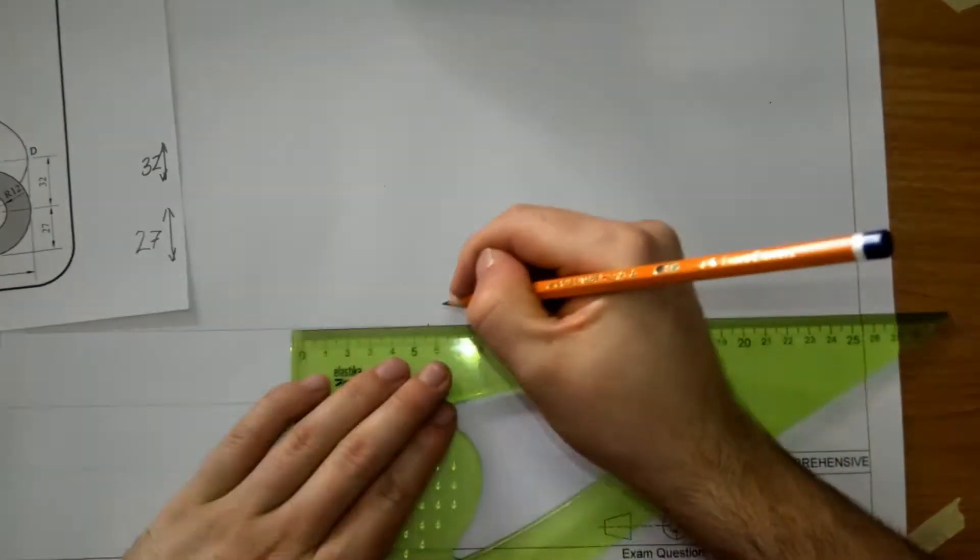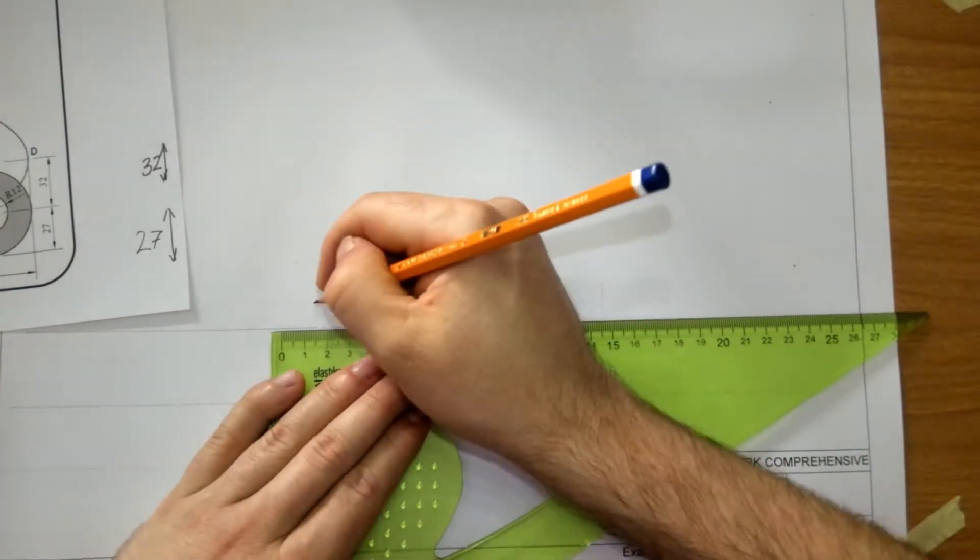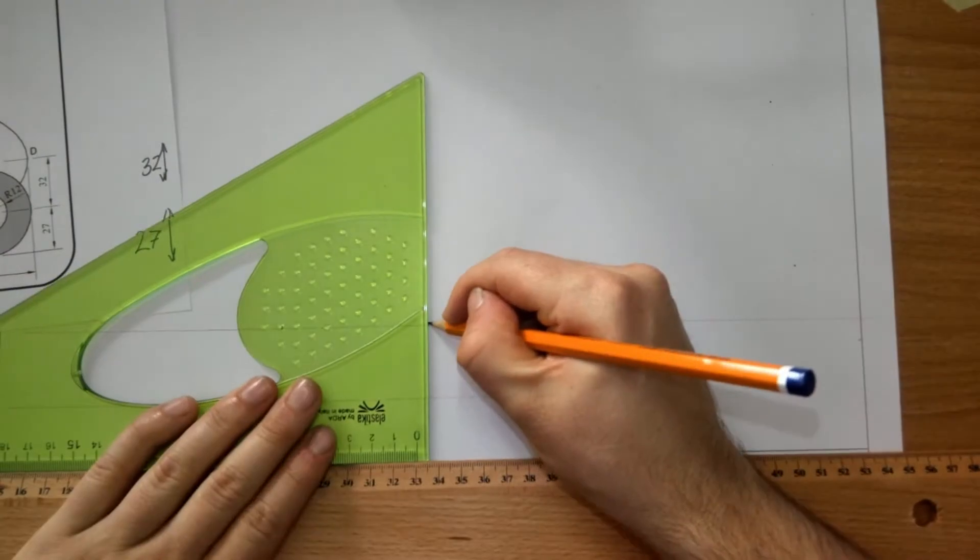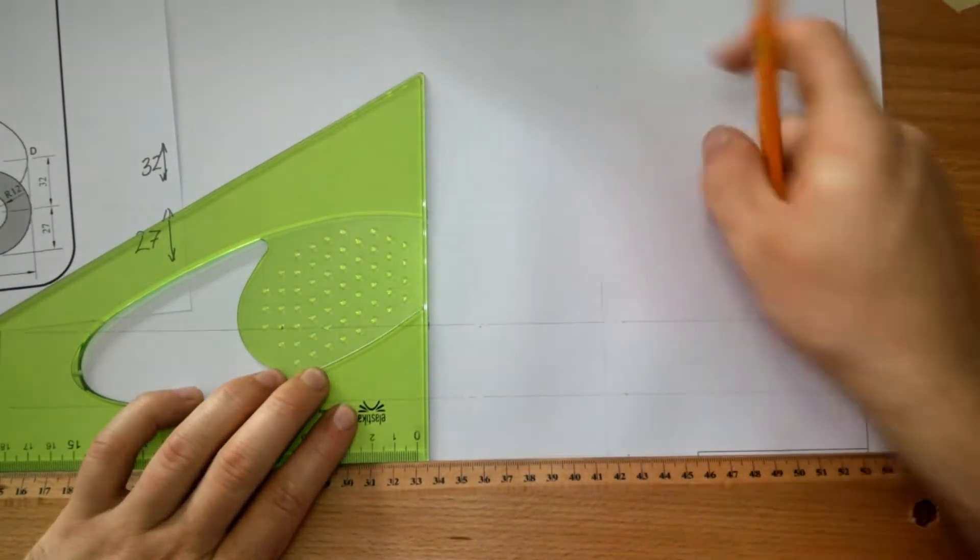I'm marking 80 there, that's the length of the major axis, and then B is 66 from the center. I'm drawing in my minor axis here.